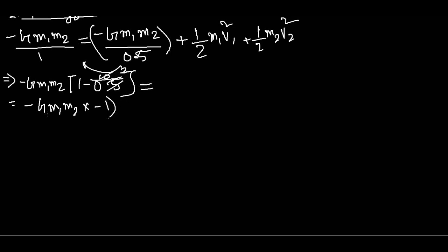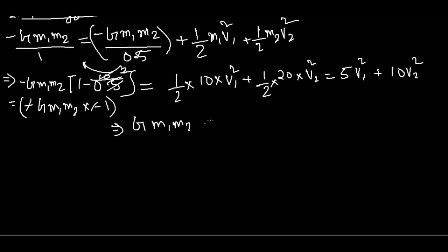This is equal to 1 by 2 M1, which is 10, into V1 square plus 1 by 2 M2, which is 20, into V2 square. So this is 5 V1 square plus 10 V2 square.